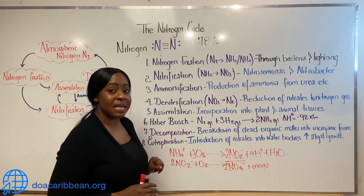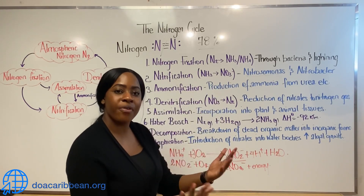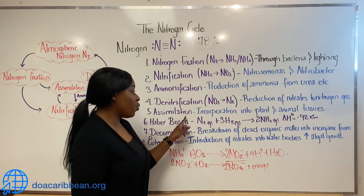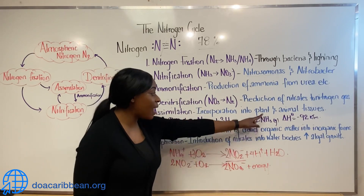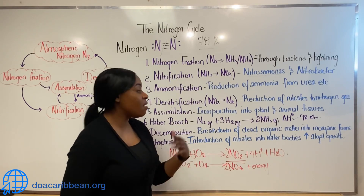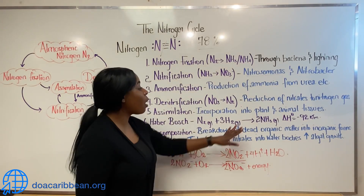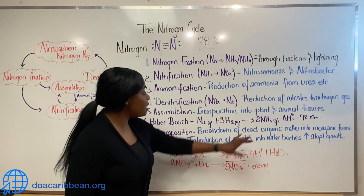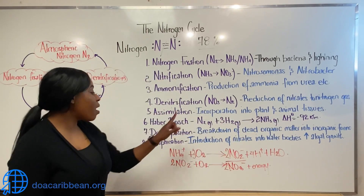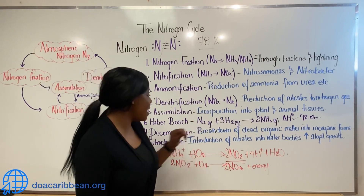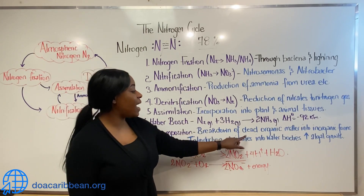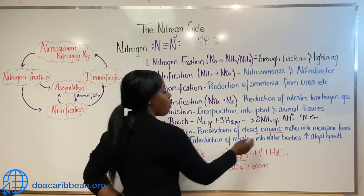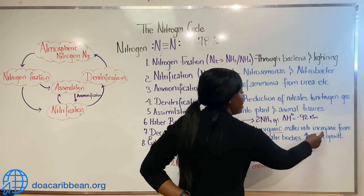Once nitrification is achieved, the nitrates can be incorporated into plant tissues — we call this process assimilation. And once nitrogen is incorporated into plant tissues, herbivores or omnivores in the food chains can consume plant tissues and also assimilate nitrogen. Now what happens if these plants and animals die? The process of decomposition will begin. Decomposition is the breakdown of dead organic matter into inorganic forms, transforming organic nitrogen into inorganic forms.